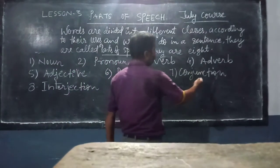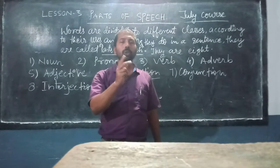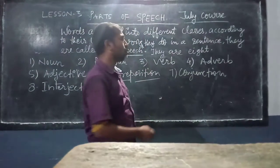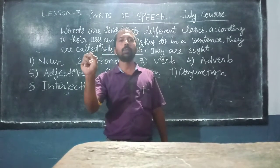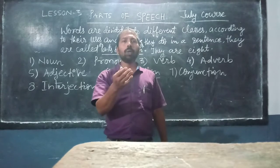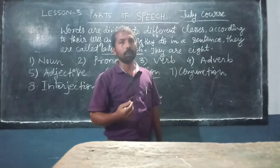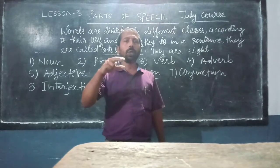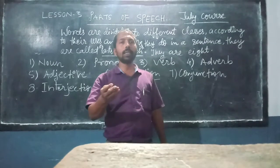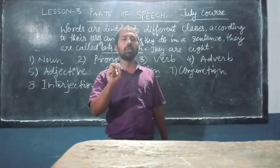Now let us see another term — conjunction. Conjunctions are the joining words. They join two words, two sentences, or more than two sentences. For example: Ram and Siam — here 'and' joins two words. When we write 'I am rich, but you are poor,' the first sentence is 'I am rich' and the second is 'you are poor,' and both are joined with 'but.' So 'and,' 'but,' 'or,' 'because' are examples of conjunctions.